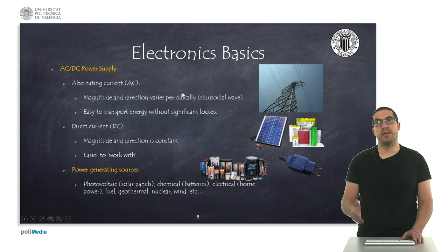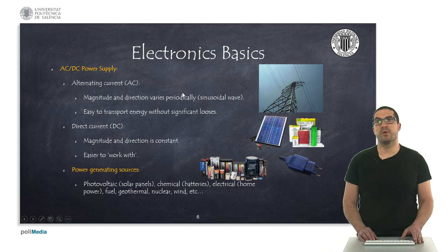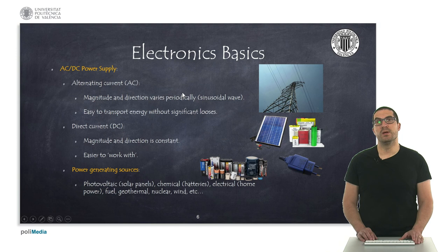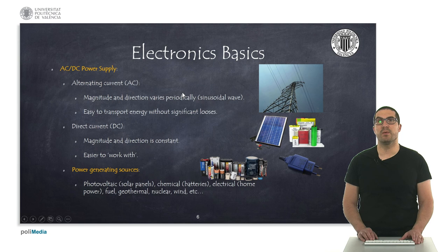In order to provide appropriate power for electronic circuits, we have two main kinds of power supplies: alternating current (AC) and direct current (DC). AC is the home power we normally use for most of our appliances — its magnitude and direction vary, so it's like a sinusoidal wave, and its main advantage is that it's easy to transport without significant losses. DC has a constant magnitude and direction, and its main advantage is that it's easy to work with. Different power generating sources include photovoltaic, chemical, or electrical — like solar panels, batteries, or home power.